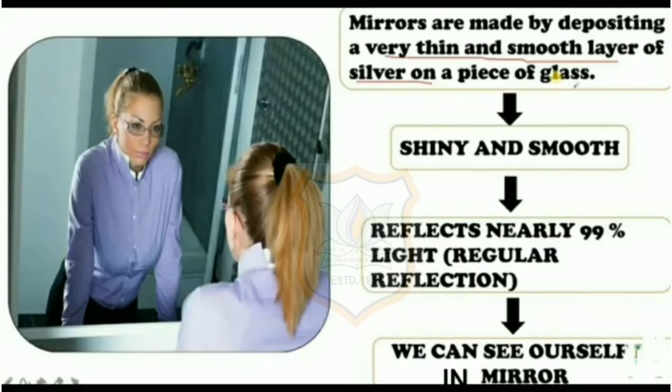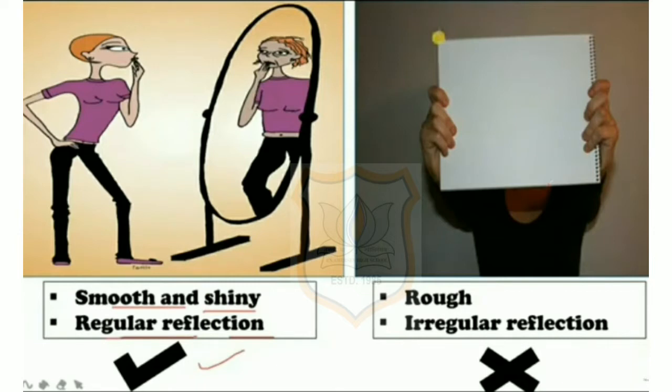Mirrors are made by depositing a very thin and smooth layer of silver on a piece of glass. It should be shiny and smooth, and reflects nearly 99% of light — regular reflection — so we can see ourselves in the mirror. In the slide you can see the smooth, shiny surface of a mirror as regular reflection. A sheet of paper is rough, so it produces irregular reflection.